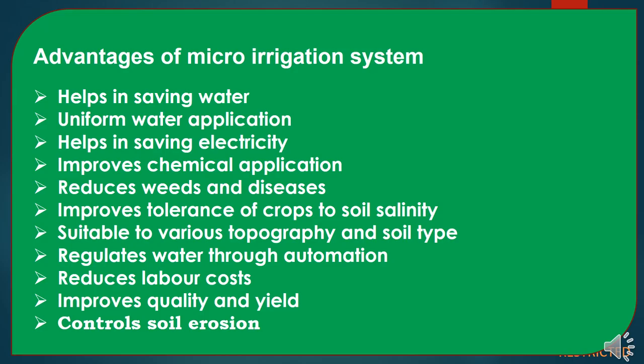Advantages of micro-irrigation system: It helps in saving water and ensures uniform water application. It helps in saving electricity and improves chemical application. It reduces weeds and diseases, and improves crop tolerance to soil salinity. It is suitable to various topographies and soil types, and regulates water through automation. It reduces labor costs, improves quality and yields, and controls soil erosion.